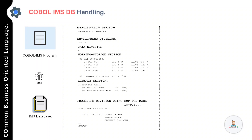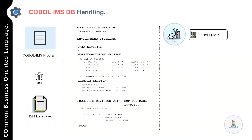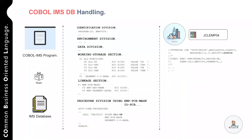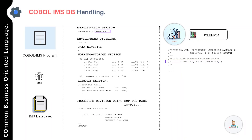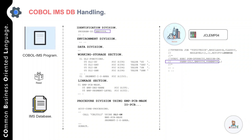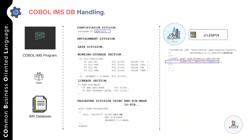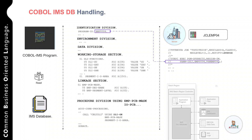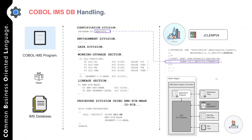To execute your COBOL IMS batch program you need a JCL, but you cannot directly invoke a COBOL IMS program with a JCL because you need an IMS interface — your program is invoked under the control of the DLI batch initialization module. DLI first loads the appropriate control blocks and modules, then loads your application program, and finally transfers control to it.